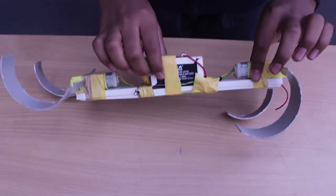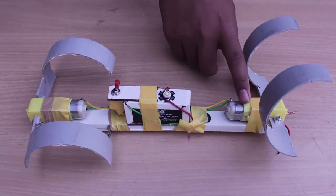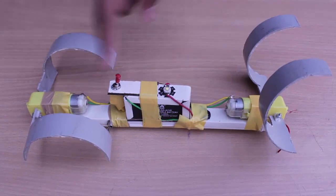You can see the two dual motors, the battery and the switch in the middle, and the four semi-circular wheels at the ends.